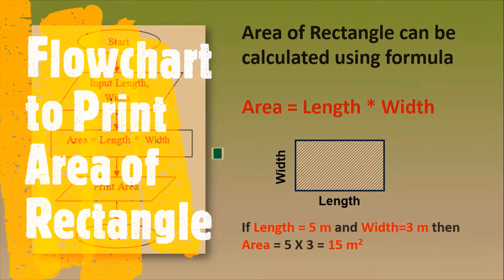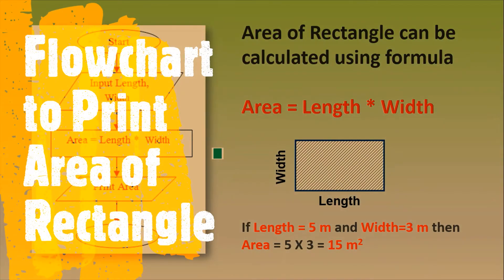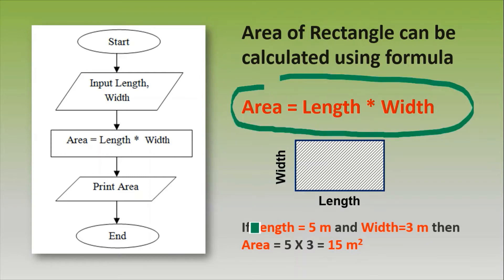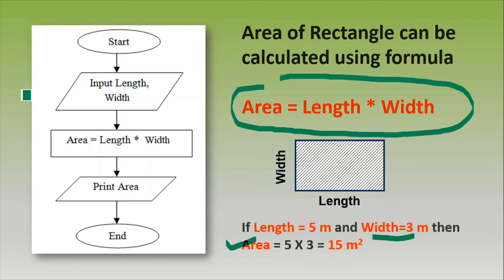In this video we will prepare a flowchart to print the area of a rectangle. The area of a rectangle can be calculated using the formula: area equals length multiplied by width. If length is 5 meters and width is 3 meters, then area is 5 multiplied by 3, which is 15 square meters.